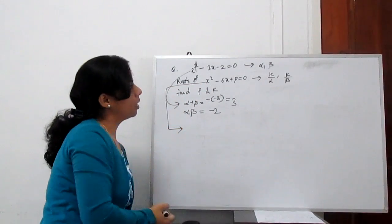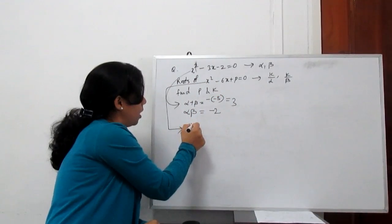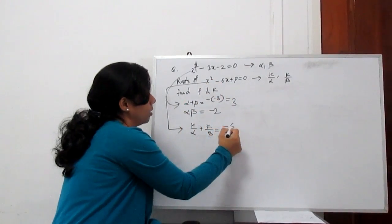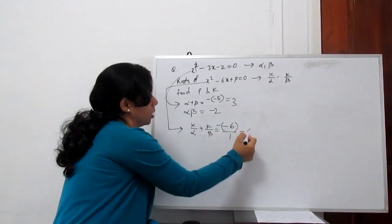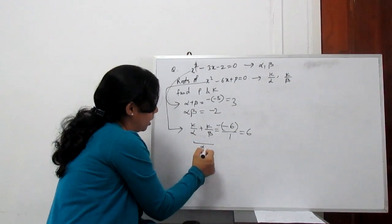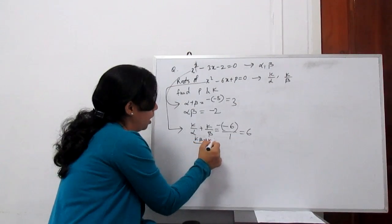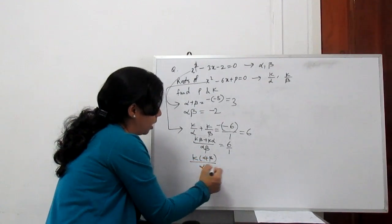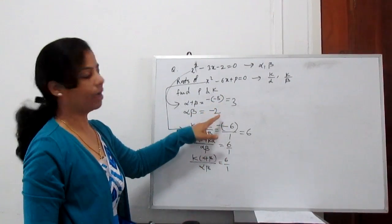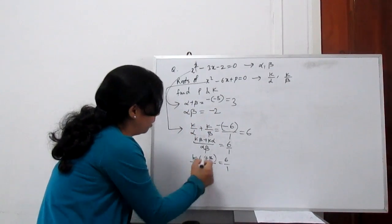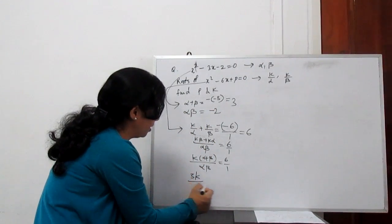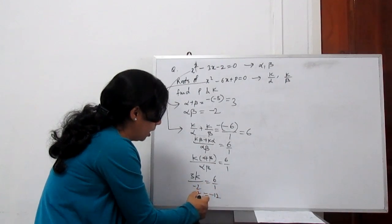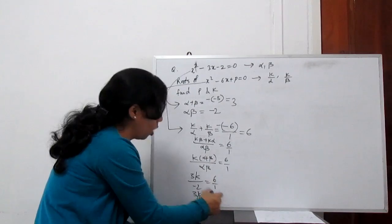Taking the second equation: the sum of roots (k by alpha) plus (k by beta) equals minus b by a, which is minus(minus 6) by 1, giving 6. Simplifying: k(alpha plus beta) divided by alpha beta equals 6. Substituting alpha plus beta equals 3 and alpha beta equals minus 2: 3k divided by minus 2 equals 6, so 3k equals minus 12, giving k equals minus 4.